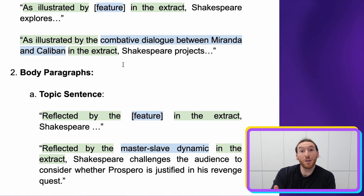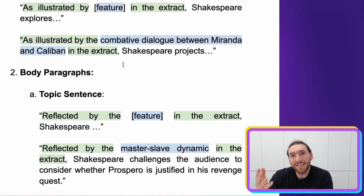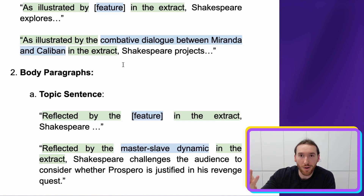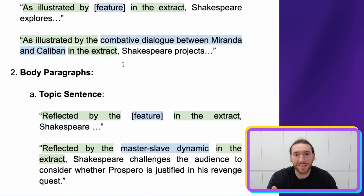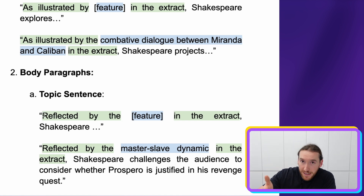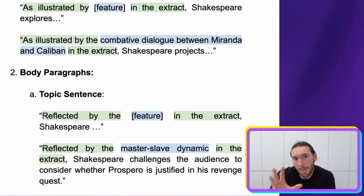In terms of body paragraphs, take a look at a topic sentence here: 'Reflected by the [feature] in the extract.' It's exactly the same pattern as the introduction one, but with a slightly different verb — 'reflected' instead of 'illustrated.' You want a few go-to verbs you can recycle through. Try not to use any single word like 'illustrated' or 'reflected' too much. Then: 'Shakespeare portrays this, represents this.' These are simple sentence starters that will force you to do the right thing.